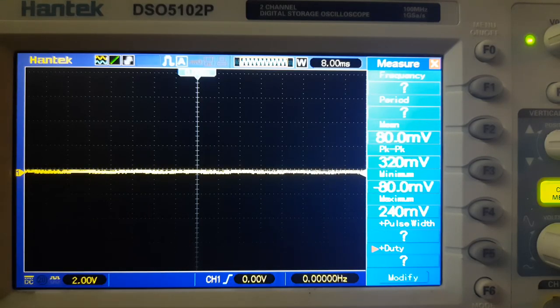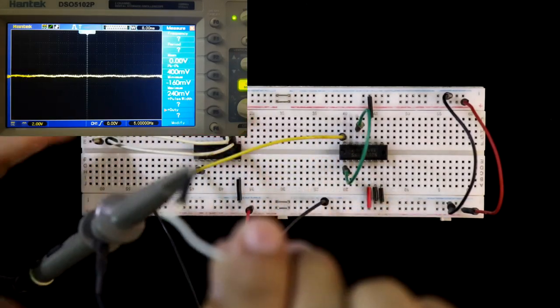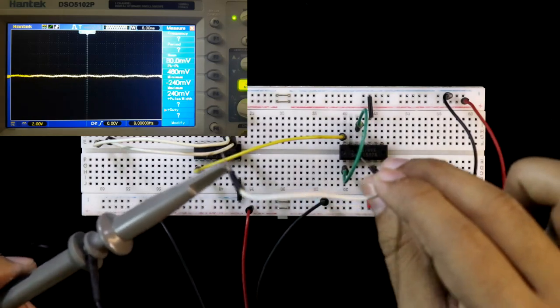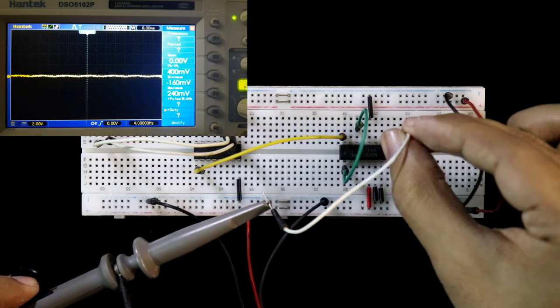Here this is the oscilloscope. Connecting the 5V power supply and I am connecting the oscilloscope. And this is channel 1 of the oscilloscope. And I am connecting this to pin number 8.